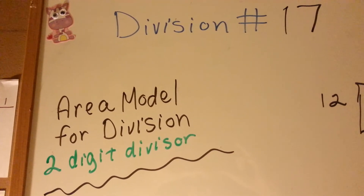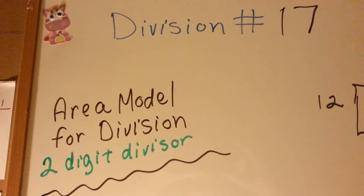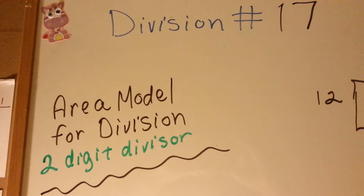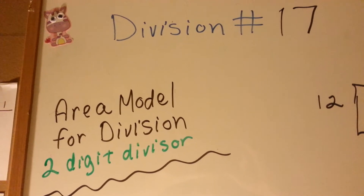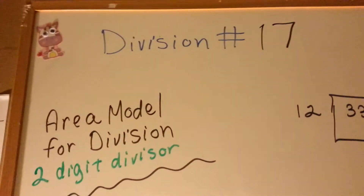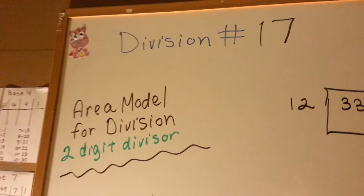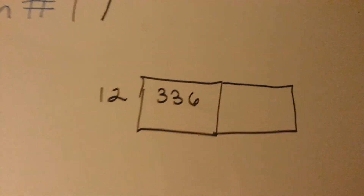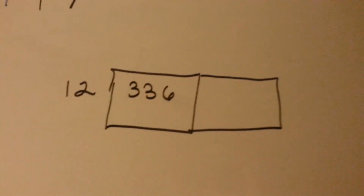Division number 17, an area model for division, a two-digit divisor. In the previous video we did a one-digit divisor. I'm going to show you a two-digit divisor.